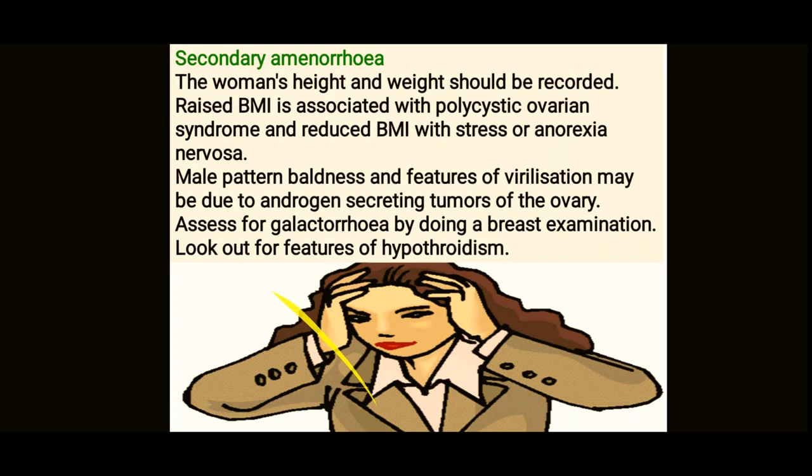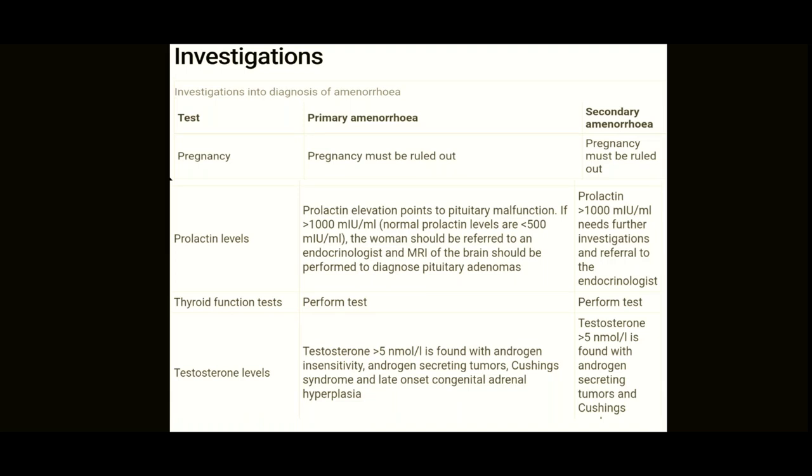For investigations, always check for pregnancy first — it is the most common cause of amenorrhea whether primary or secondary. Check prolactin levels: if prolactin is more than 1000, the woman should be referred to an endocrinologist and MRI of the brain should be performed to diagnose pituitary adenoma. In secondary amenorrhea, if prolactin is more than 1000, the patient again needs referral. Normal prolactin levels are less than 500.